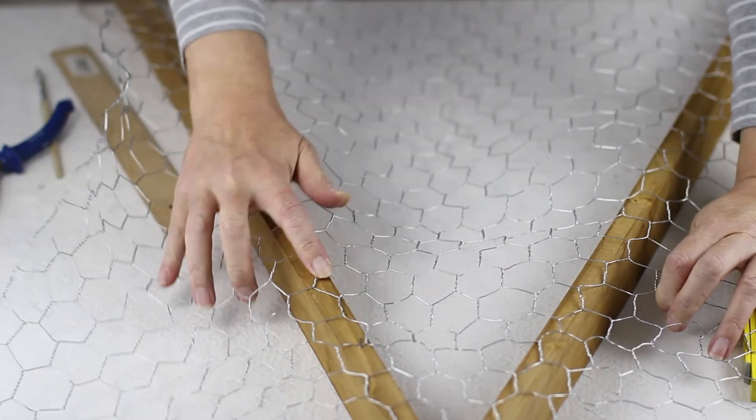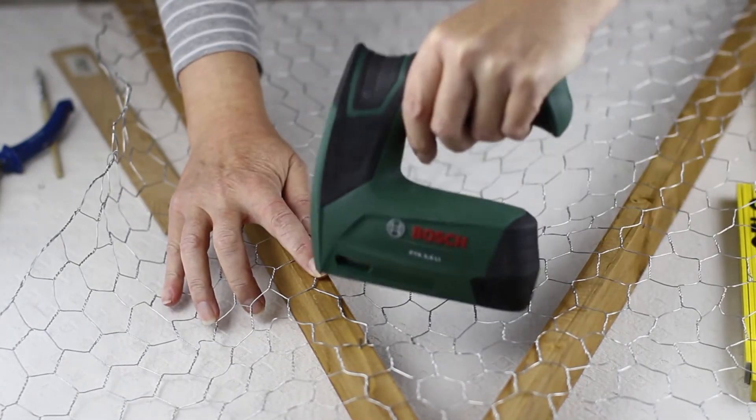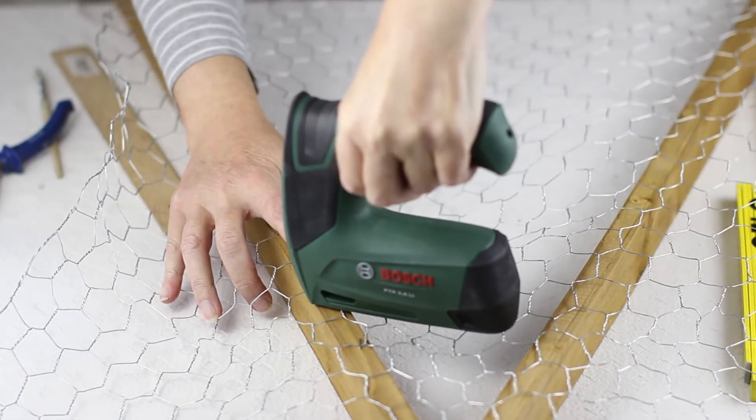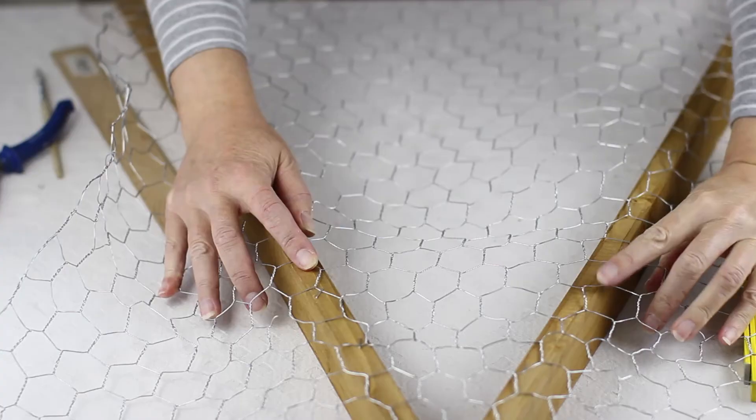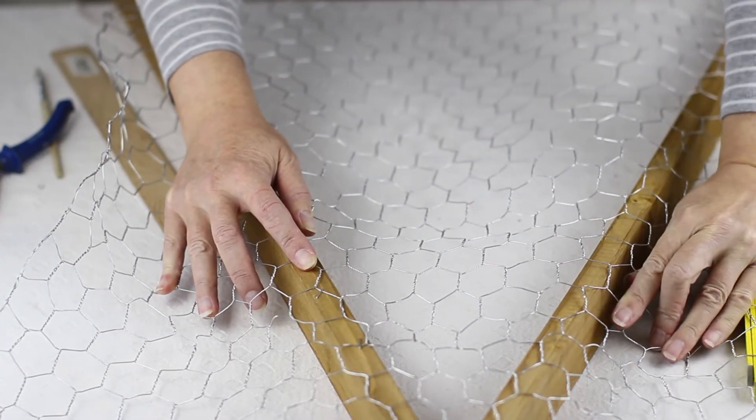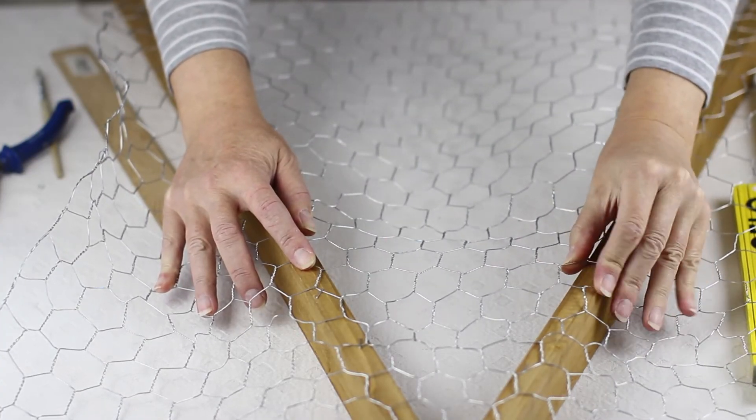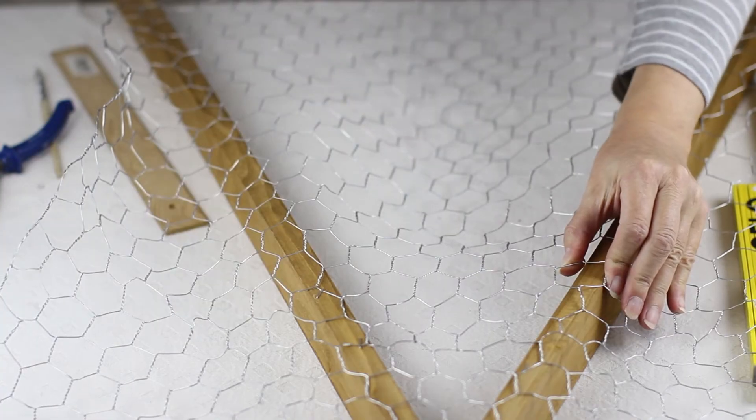And I've stretched it over the frame and I'm using my staple gun to staple the chicken wire to the back of the frame. Then once I've stapled the chicken wire to the whole of the frame then I'll just trim all the excess chicken wire off.